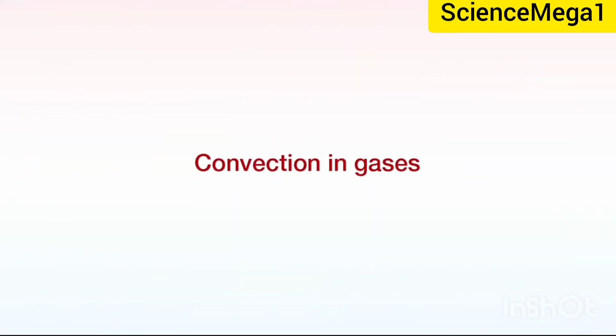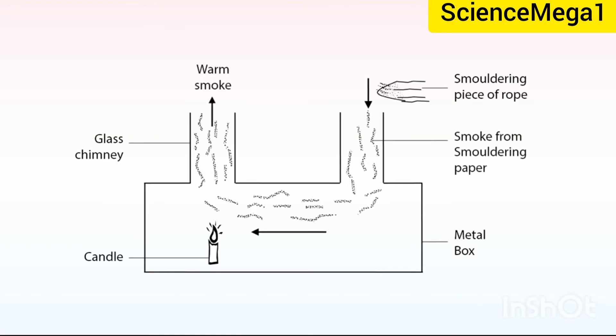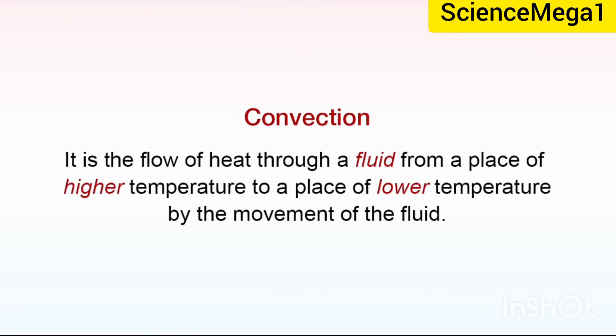Let's now look at convection in gases. Convection in gases may be demonstrated by using the apparatus on your screen. It consists of a box with a glass front and two chimneys fixed at the top. A lighted candle is placed under one of the chimneys and a smoldering piece of rope is held above the chimney and smoke passes through the box up the other chimney as shown on your screen. From our discussion so far, we can now define convection. It is the flow of heat through a fluid from a place of higher temperature to a place of lower temperature by movement of the fluid.